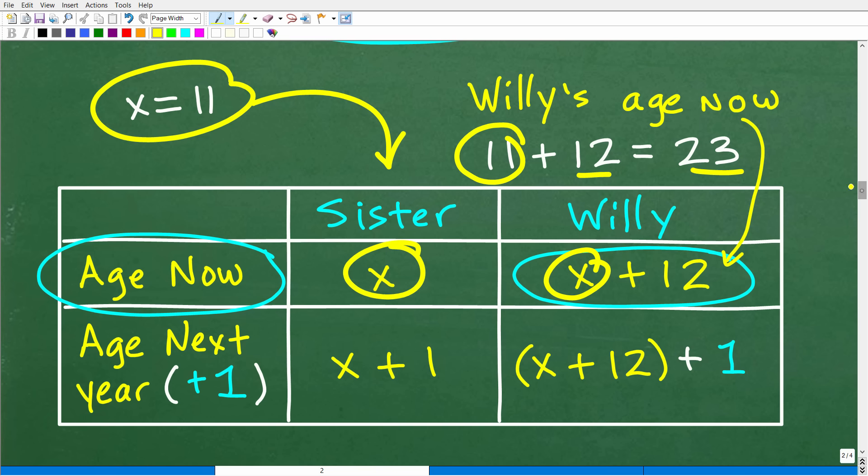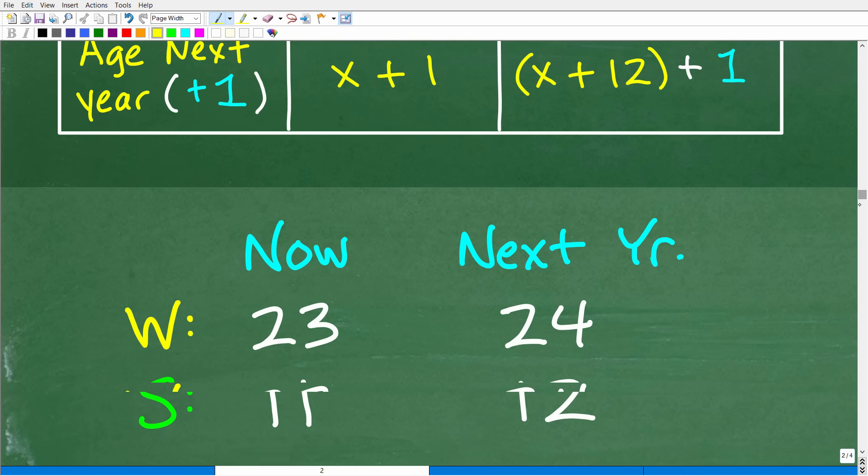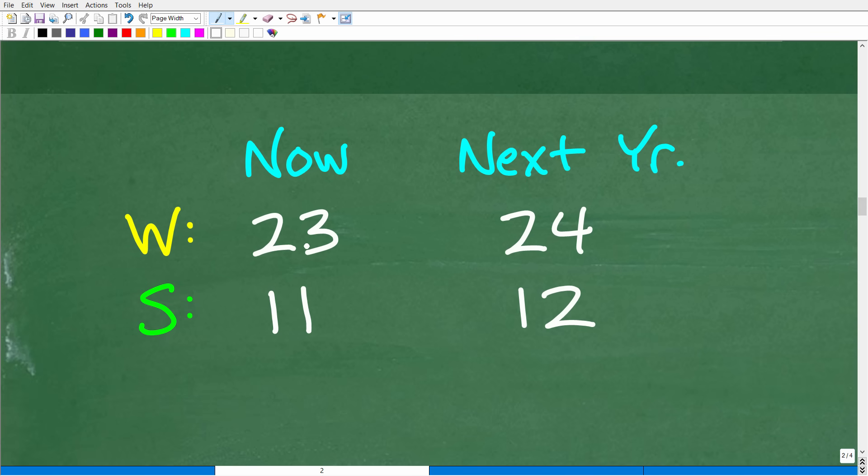All right, now let's go ahead and see if this makes sense. Okay, so right now, Willie would be 23 years old. That's what we're saying. All right, so let's see if this is right. So X was 11. Remember, X was 11. That's the sister's age now. So right now, Willie's 23, and his sister is 11. Now, next year, the sister's going to go from 11 to 12 years old, and Willie's going to go from 23 to 24 years old. Now, is Willie twice as old as his sister next year? Well, indeed, he is. So this all works out in the end.